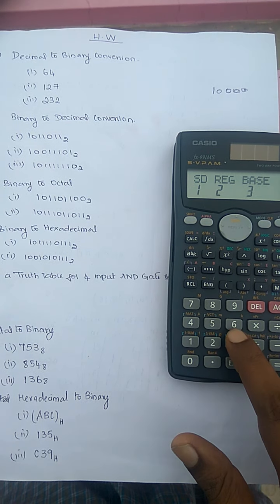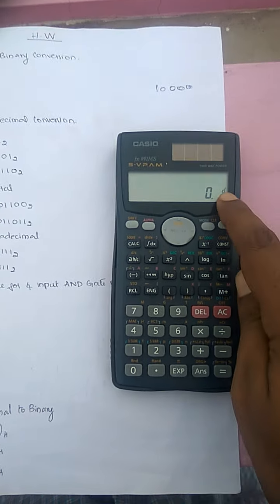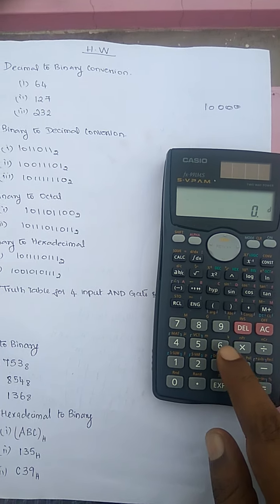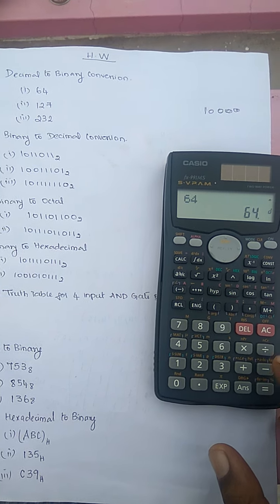You have to press 3, and here you have D. D means it is a decimal number. So the first problem is given as 64, so you type 64 here.